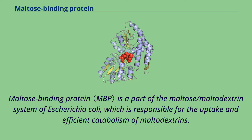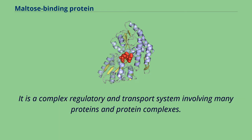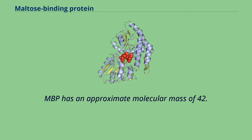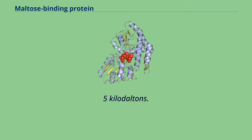Maltose binding protein (MBP) is a part of the maltose-maltodextrin system of Escherichia coli, which is responsible for the uptake and efficient catabolism of maltodextrins. It is a complex regulatory and transport system involving many proteins and protein complexes. MBP has an approximate molecular mass of 42.5 kilodaltons.